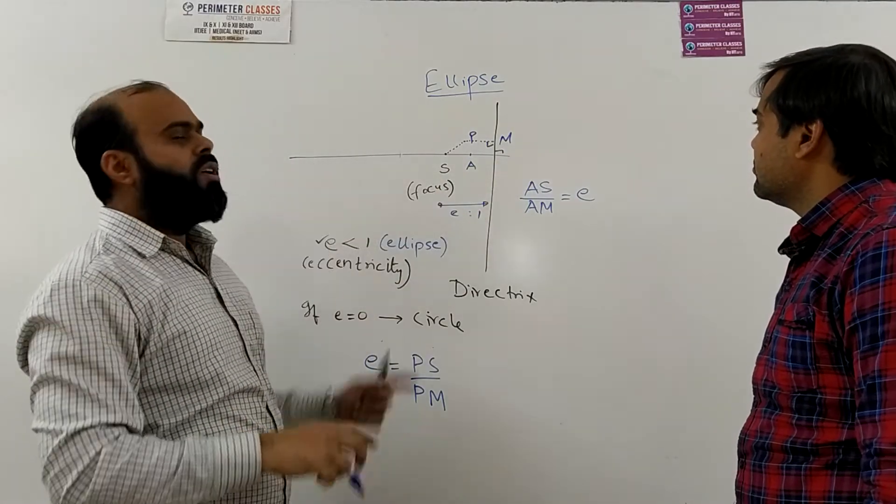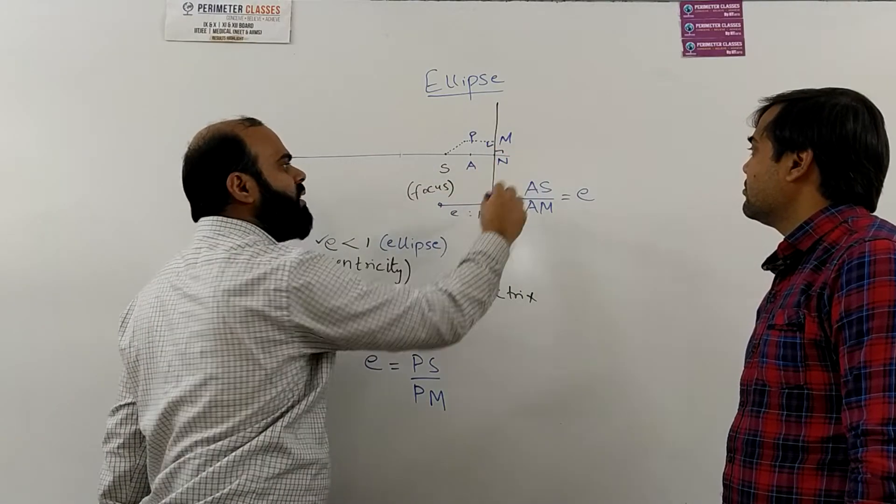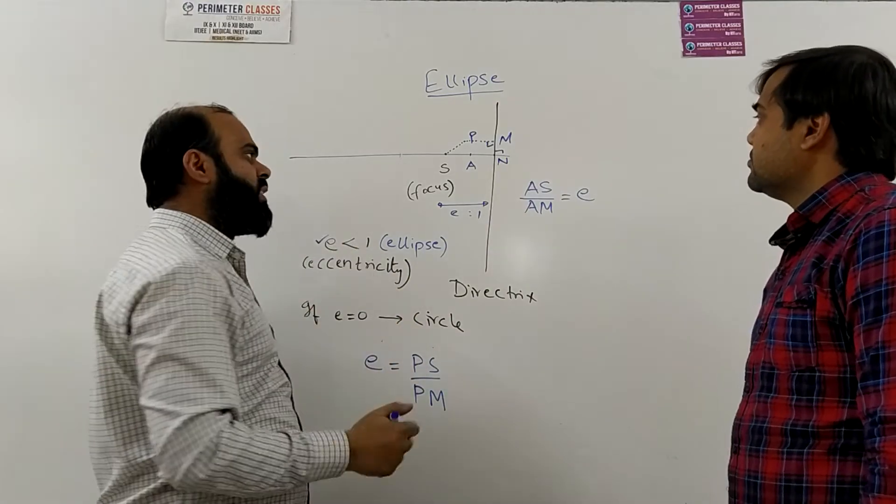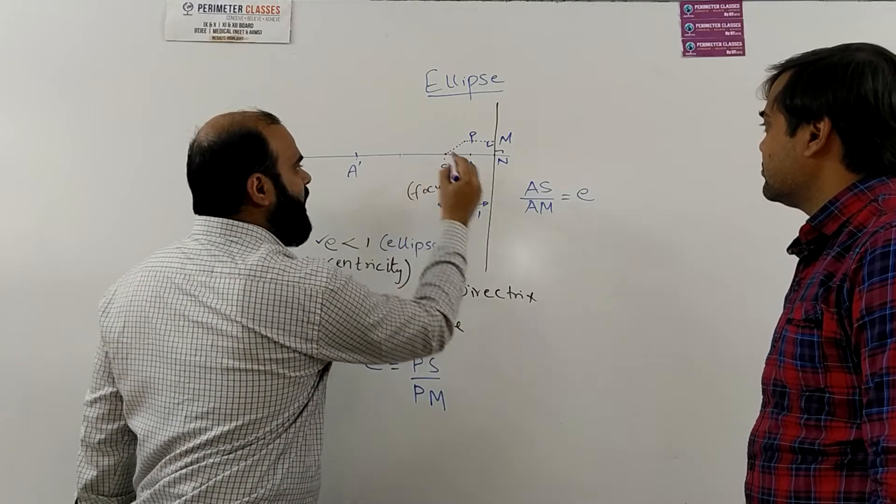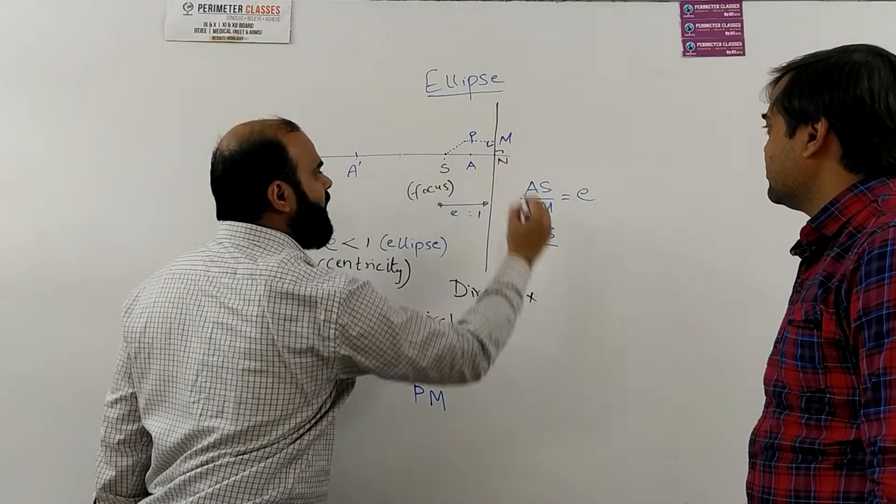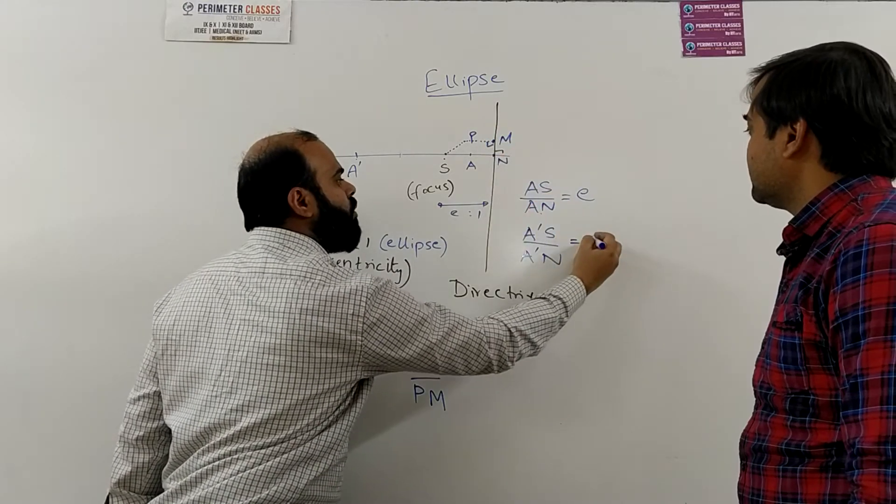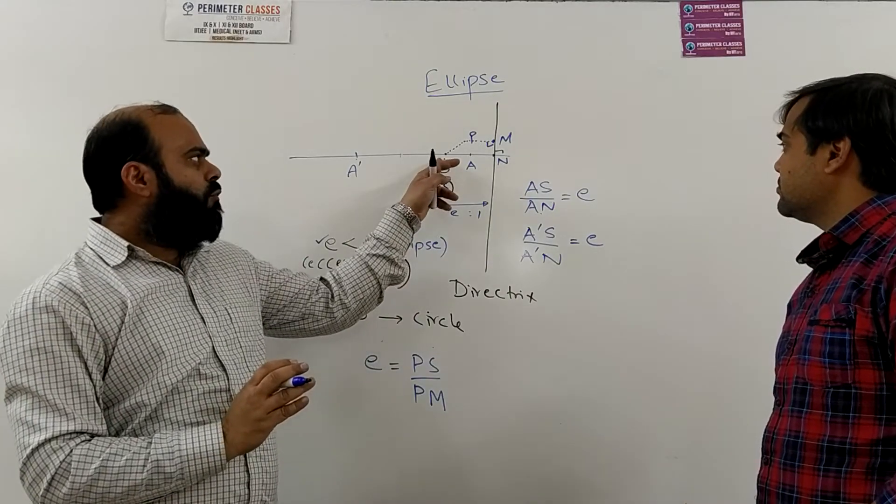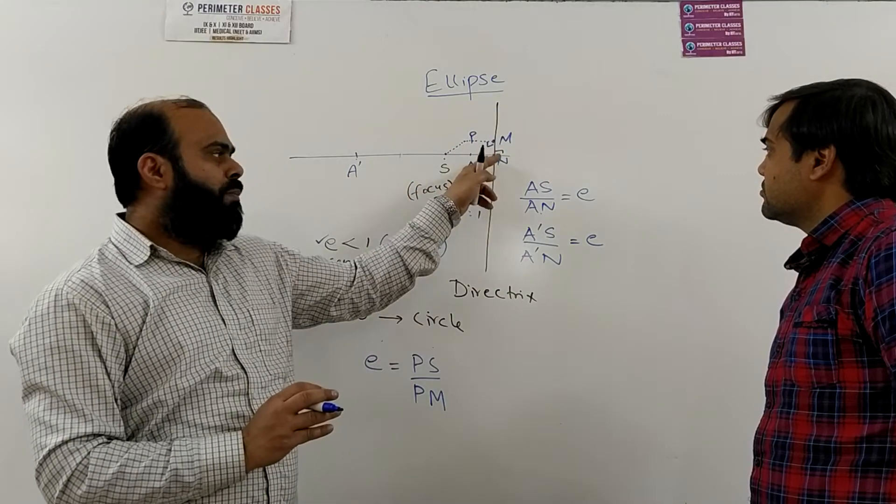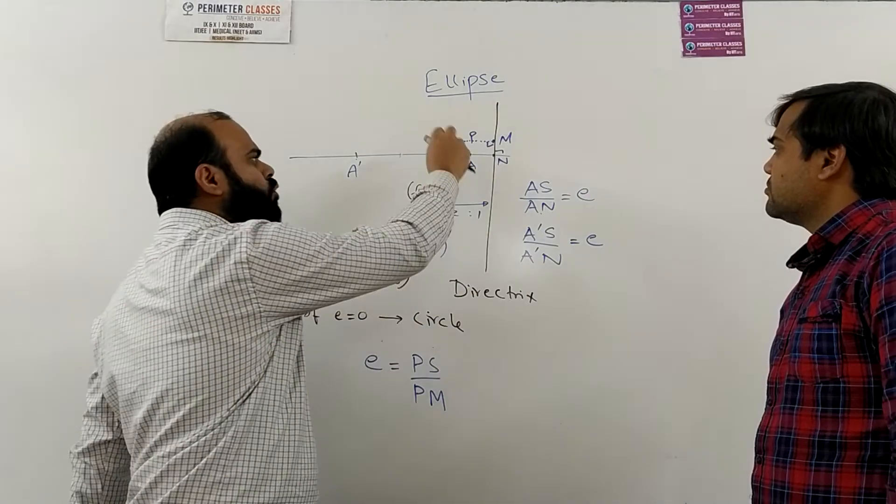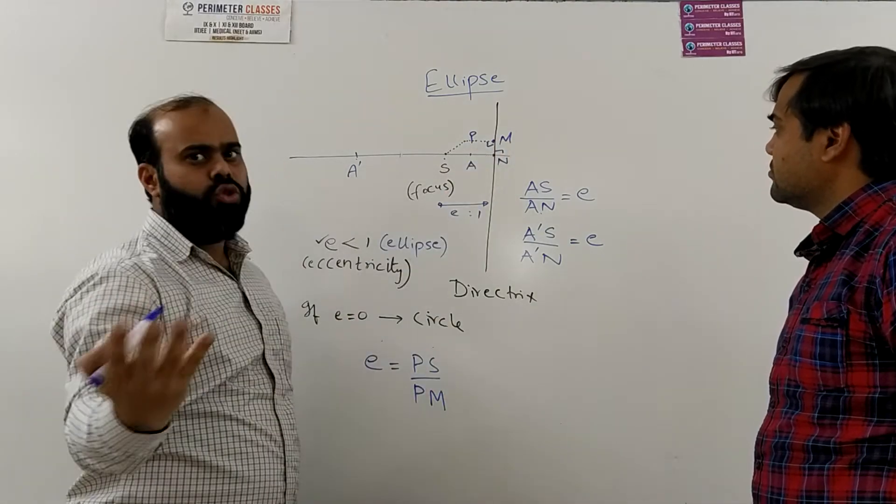There is one more point on this blue line which is dividing AS by AM in the ratio e is to 1 but that point will be an external point, external division. So we may get a point A' also such that A'S upon A'M' is equal to e. So basically if you take a focus, you take a directrix and you join the focus with the foot of perpendicular on the directrix, you will get two points on this line: one is A, another is A', which is dividing SN in the ratio e to 1.